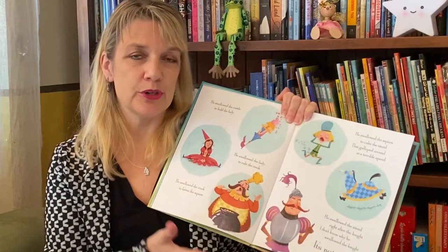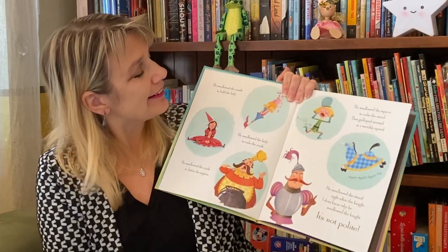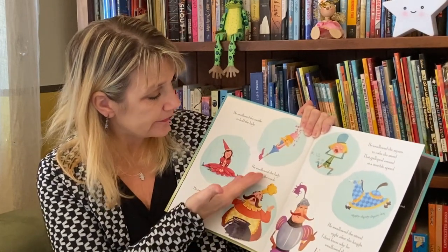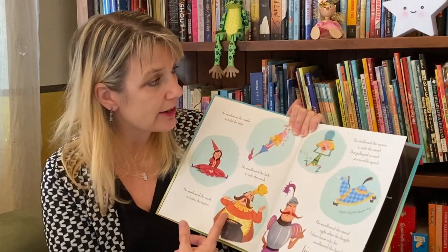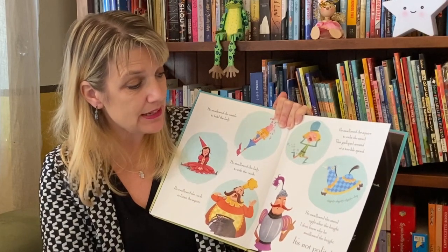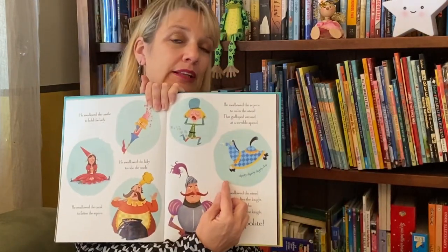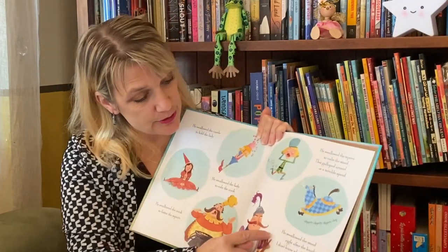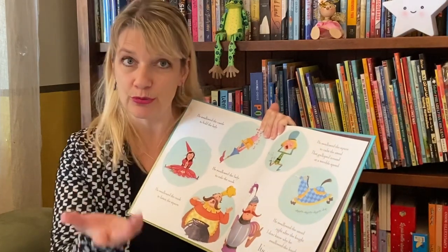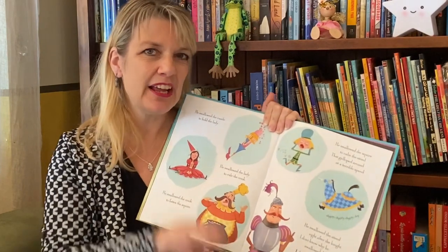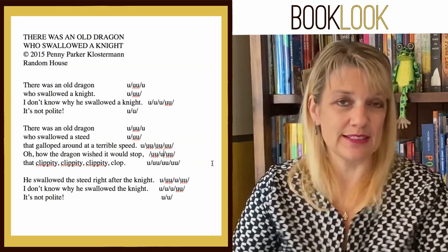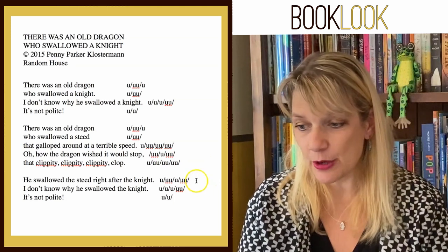Let me find an example. In this spread near the very end of the book — I don't want to give away the ending, you'll have to go get the book — we've got the whole list of what the dragon has swallowed: 'He swallowed the castle to hold the lady, the lady to rule the cook, the cook to fatten the squire, the squire to calm the steed that galloped around at a terrible speed.' And in there we have the little picture of 'clippity clippity clippity clop.' It appears in tiny print at various points, even though it's not part of the stanzas. It's a little extra thrown in now and then — really cute, adds humor, because this thing is continuing to drive the dragon crazy.